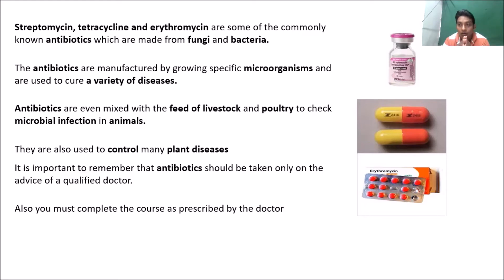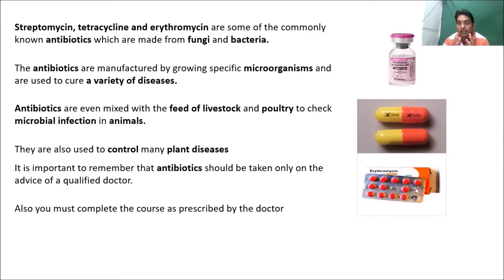Coming to livestock and poultry, we use antibiotics for good yield and pathogen-resistant varieties. These antibiotics are mixed with the feed of livestock and poultry — for example, antibiotic doses are given to hens so they remain healthy and resistant to disease-causing organisms. Antibiotics are also used in protecting plants from and controlling plant diseases.